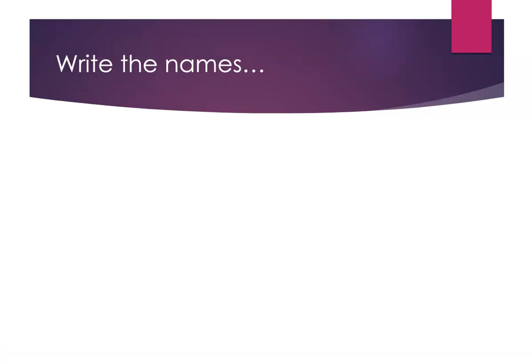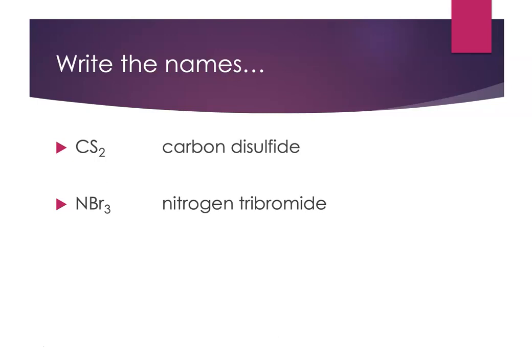So let's do some naming. I'll give you some formulas and we'll write the name — feel free to pause this, think about the name on your own, and then listen to my explanation. First example: CS2 — the name of that would be carbon disulfide. Next: NBr3 — nitrogen tribromide. And N2O5 — two nitrogens, five oxygens — that's going to be dinitrogen pentoxide. I do want to point out that sometimes when syllables bump up against each other, instead of saying pent-oxide we just go to pentoxide.